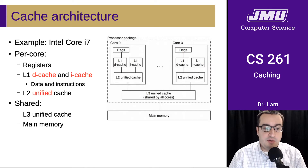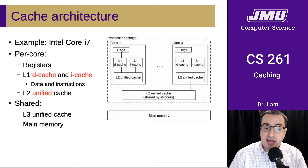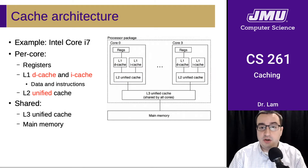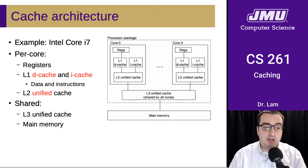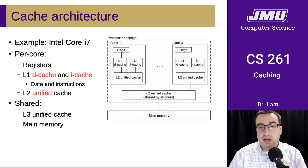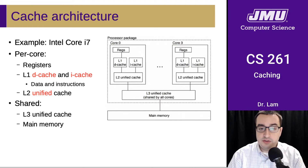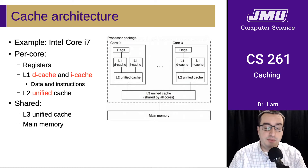For each core, we have the registers. We also have an L1 data cache as well as an L1 instruction cache. Then we have an L2 unified cache per core that stores both data and instructions. And then there's an L3 unified cache that is shared by all the cores, but is still on the CPU.